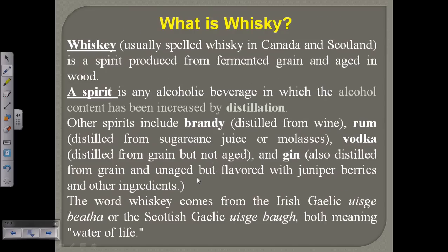Now what is whisky? Whisky is usually spelled 'whisky' in Canada and Scotland, because it was previously developed in Scotland — where it was called Scotch whisky. It is a spirit produced from fermented grain and aged in wood. It is a fermented product of grain, so we take grain as a polysaccharide or carbohydrate source material, and it is aged in wooden barrels.